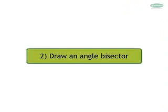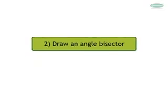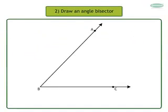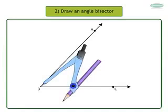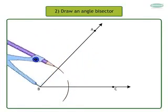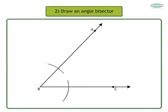Now let us learn to draw an angle bisector. Given is angle ABC. Now take B as center. Keeping the point of compass on B, draw two arcs intersecting rays AB and BC at points E and F respectively.